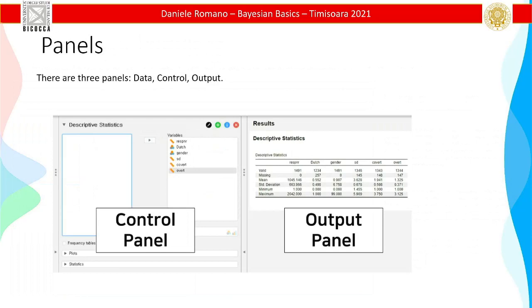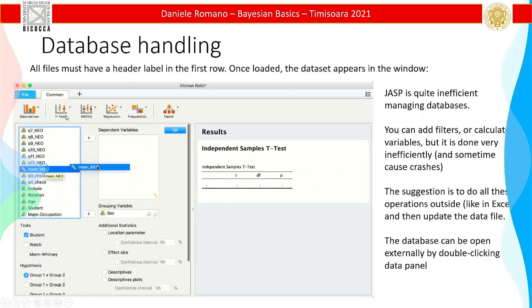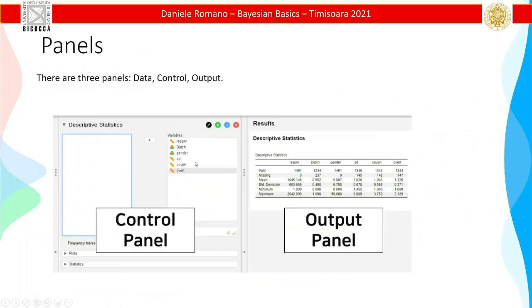JASP is graphical user software — easy, with a nice menu where you just click. You select your test, it opens a window where you manage all your variables. This is called the control panel. Imagine three panels: the data, the control panel in the middle, and the output on the right. The output is immediately calculated as soon as you input something in the control panel. If you're running a quick analysis, it's super convenient. But if you're running an analysis that takes half an hour, it can crash the computer.